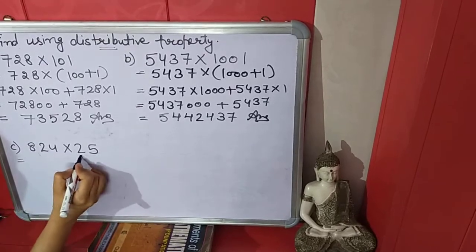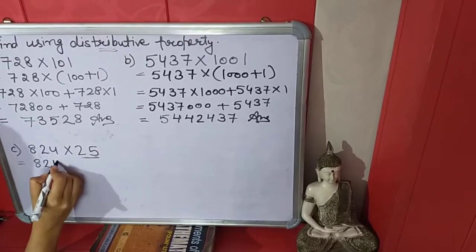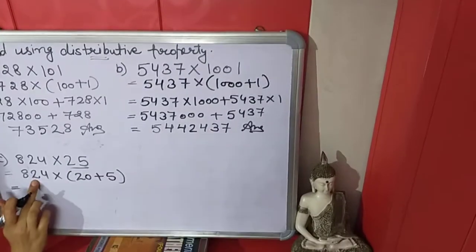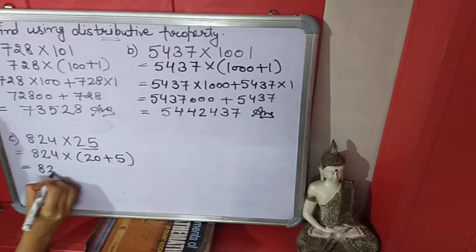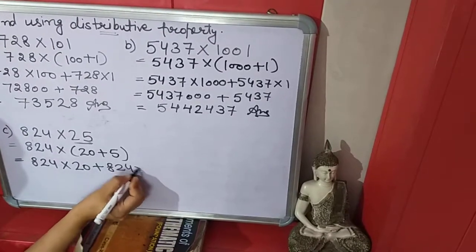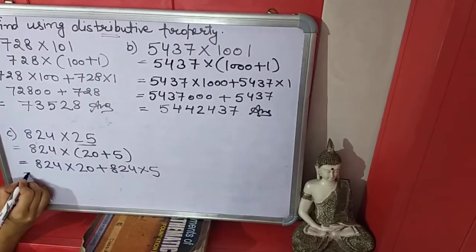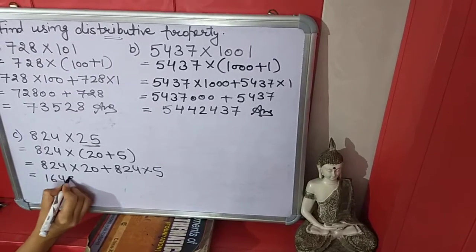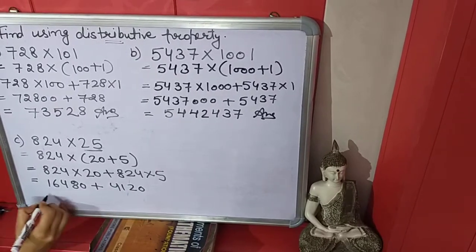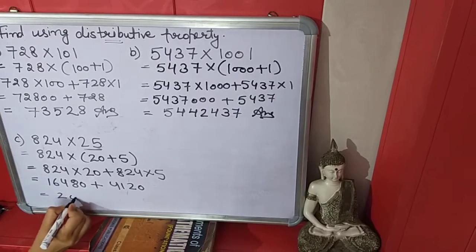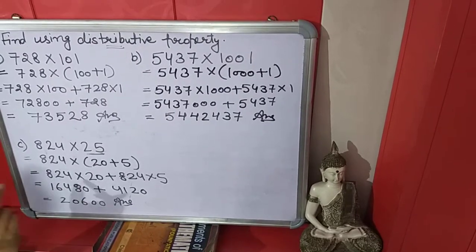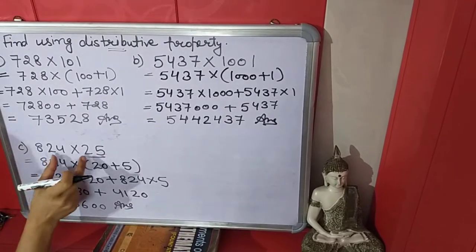Next question: again we will break this number and open the bracket. This outside number will be multiplied by both numbers inside. Then we multiply and add to get the answer. So we use distributive property to solve this question.